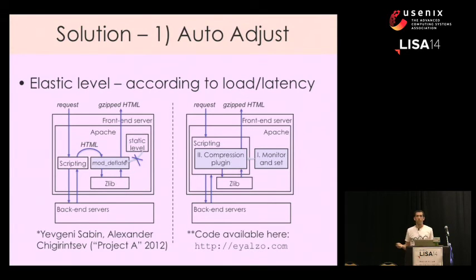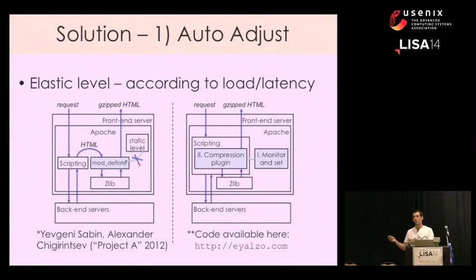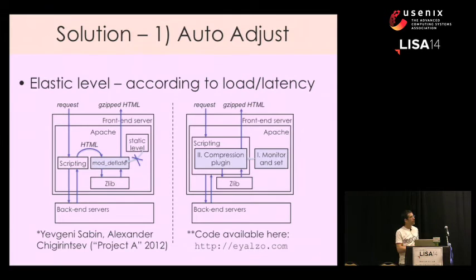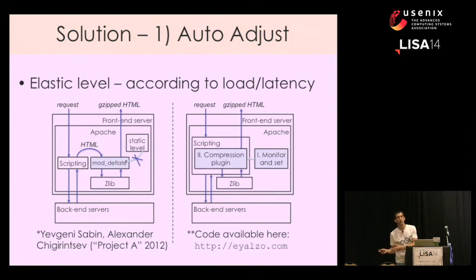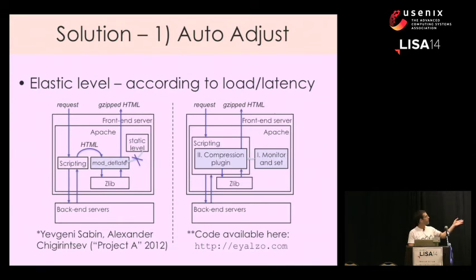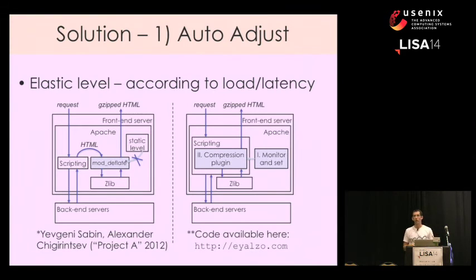And if you have more CPU available, you can use level 9 and save the extra 1, 2, 3, or 25% of your bandwidth. The second solution is a bit simpler — it's a PHP code that reads the compression level from a separate background process and uses it instead of the static level, applied at the end of your PHP code. You can easily adapt it to any other language you're using.